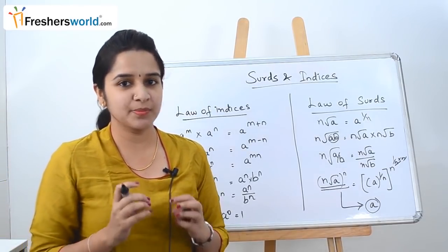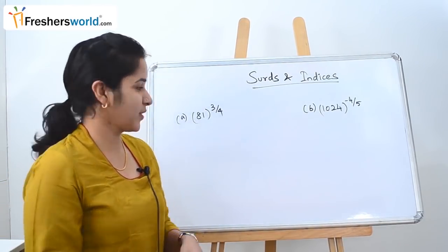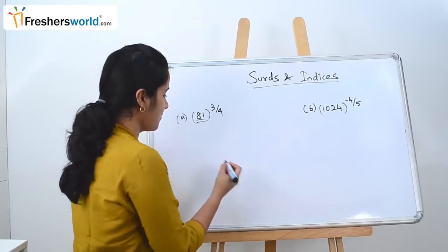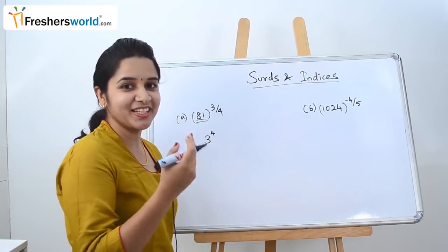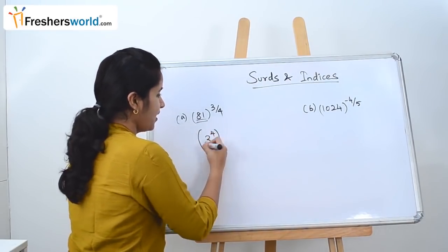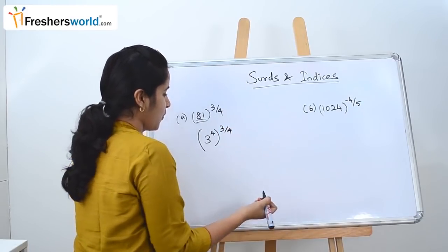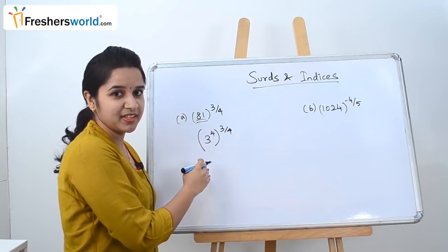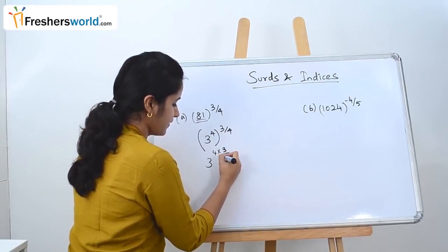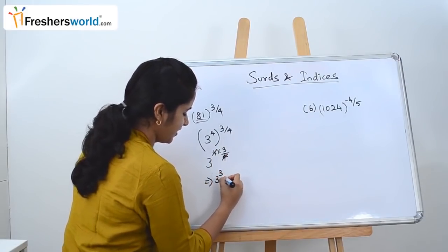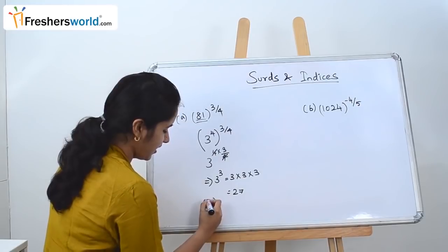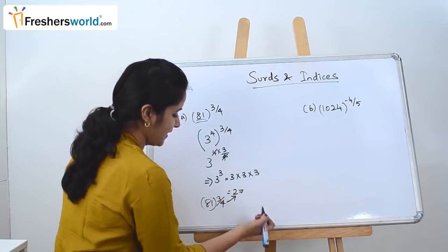To understand this concept better, let's solve some simple sums. The question given is 81 to the power 3 by 4. We know that 81 is nothing but 3 power 4, because 3 into 3 is 9, 9 into 3 is 27, and 27 into 3 is 81. So it can be written as 3 power 4, the whole power 3 by 4. Multiplying the powers, 4 into 3 by 4, the 4s cancel, giving 3 power 3, which is 3 into 3 into 3 equals 27. So 81 to the power 3 by 4 is nothing but 27.